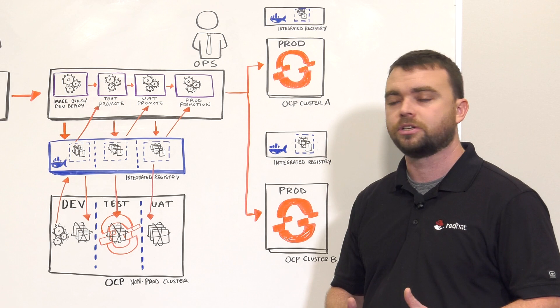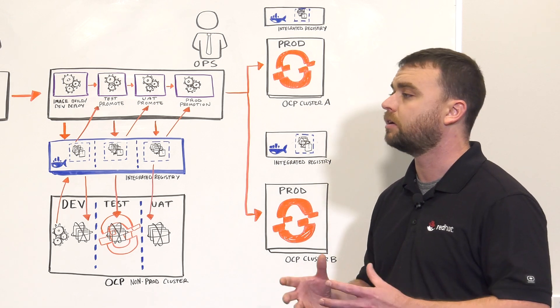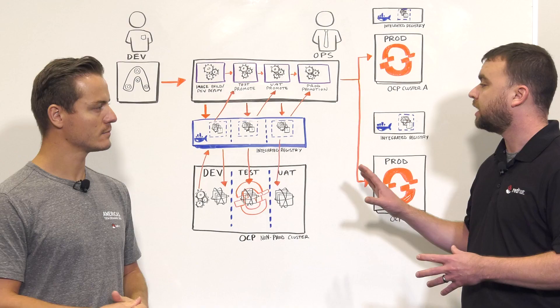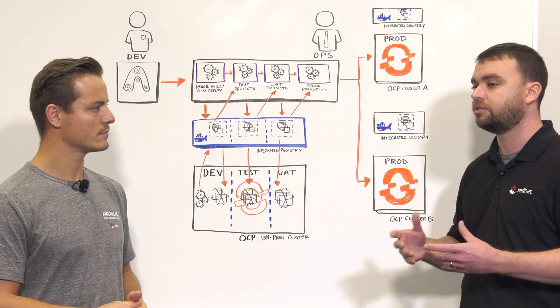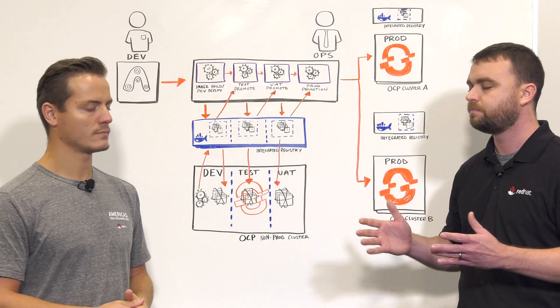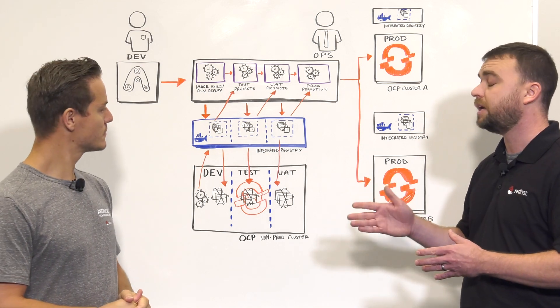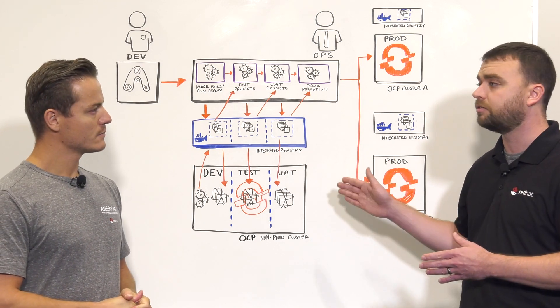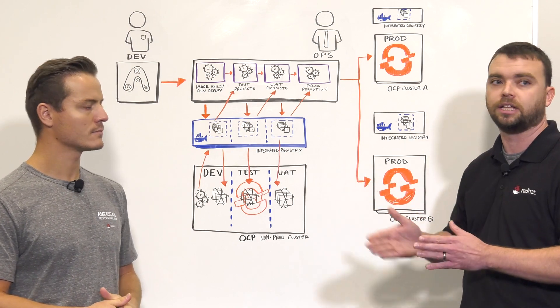So in order to have multiple clusters, one of the things we have to consider is where our images will live. By default, OpenShift comes with an integrated registry. And that registry will hold those images and the different tags associated with them. So for this process, the main goal for us is to get that image out of our on-premise registry and push it into the cloud.